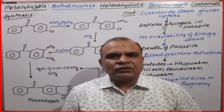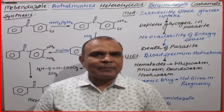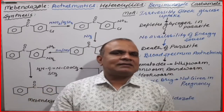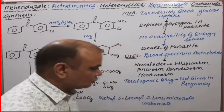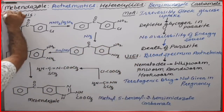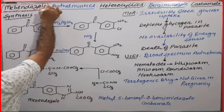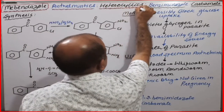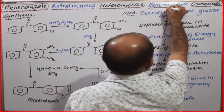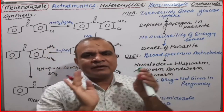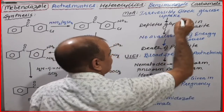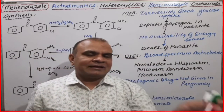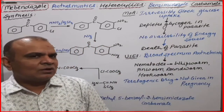Today we will discuss Mebendazole. Mebendazole basically belongs to the anthelmintic category. As we have discussed in the classification, Mebendazole belongs to the heterocyclic subcategory. Heterocyclic means it has a benzimidazole ring system — benzene is attached to the imidazole ring. It also has a carbamate functional group. We will discuss how it is a carbamate, how it is heterocyclic, and how it is benzimidazole.